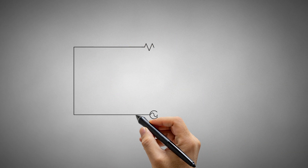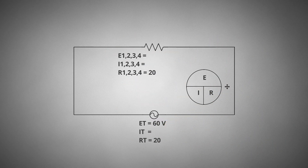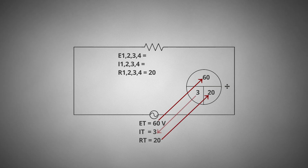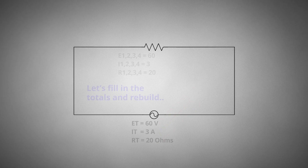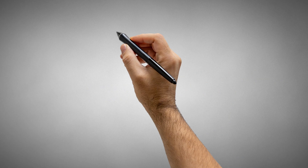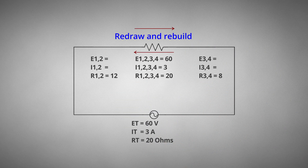Now redraw the circuit. Now that we have solved the total resistance, we can calculate all other quantities using Ohm's Law. 60 volts divided by 20 ohms of total resistance equals 3 amps total. Let's fill in the totals and rebuild — R1, 2, 3, and 4 are the same as the total. Continue to redraw and rebuild the circuit working backwards, applying the right rule.